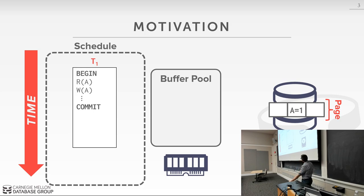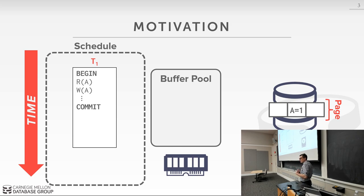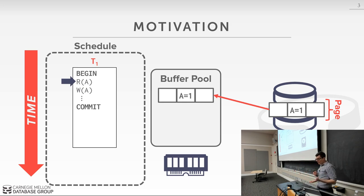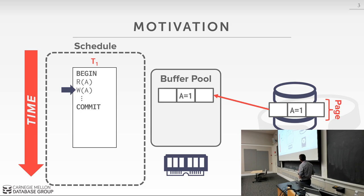I want to start off today's lecture with a simple motivating example. We're going to run a simple transaction that does a read on A and a write on A, and see where physically the changes this transaction makes actually end up. The transaction starts off with nothing in the buffer pool and wants to do a read on A. Out on disk we have a single page with one record A, so to read this record we copy it from the page on disk into our buffer pool. Once it's in memory, we do a write on A — we modify the object in memory first, then make our write to our buffer pool.